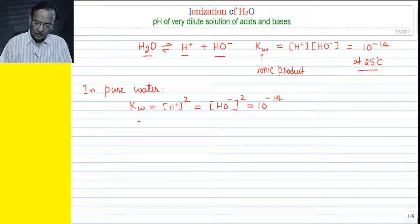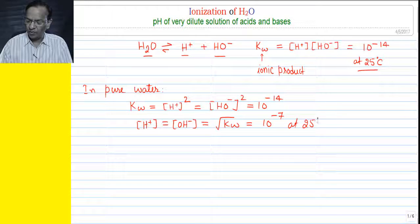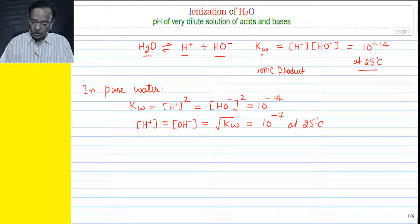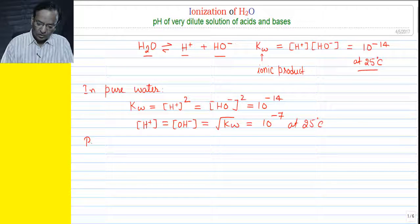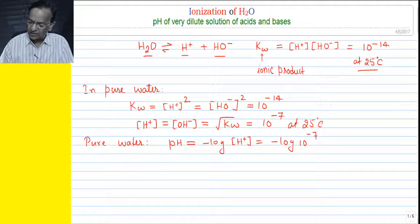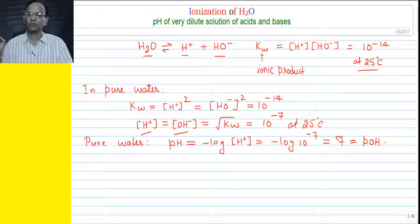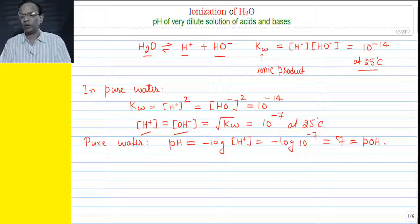So concentration of H⁺ = √Kw = 10⁻⁷ at 25°C. In pure water, pH — which is the negative log of concentration of hydrogen ion — will be equal to −log(10⁻⁷) = 7. The same will be pOH also, because [H⁺] = [OH⁻]. So pH of pure water at 25°C is 7.